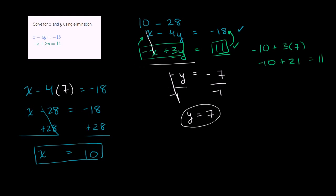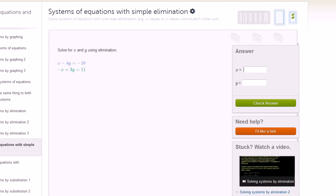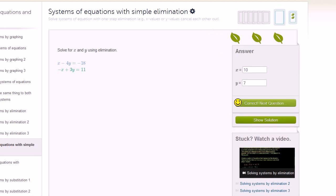So now let's check our answer on the little exercise engine. So we have y is equal to 7, x is equal to 10. So we have x is equal to 10 and y is equal to 7. Check our answer, and we got it right. We're ready to do some more cupcake planning with the king.